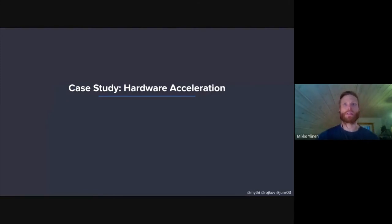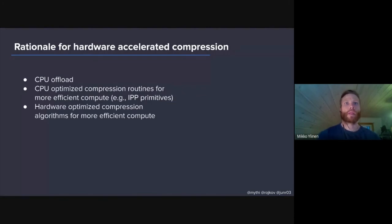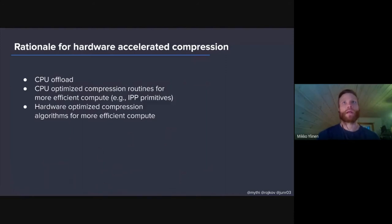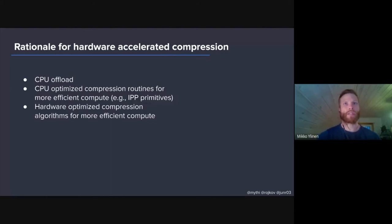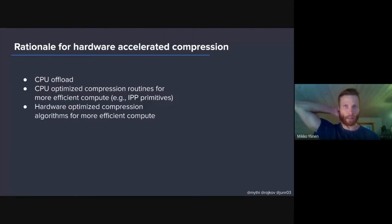Our first case study talks about implementing hardware-accelerated compression for Envoy. Some rationale for why: hardware acceleration can bring several benefits to your application. Being a very time-consuming process, it might make sense to offload all this compression processing to a dedicated coprocessor — sometimes hardware that is completely optimized for this particular task — and then you can free CPU cycles for something more important that runs on the main CPU.